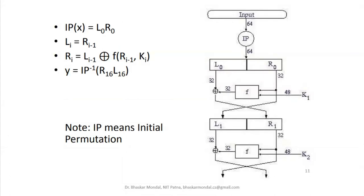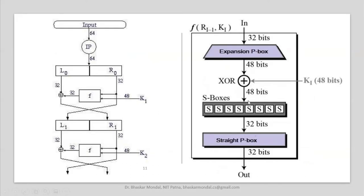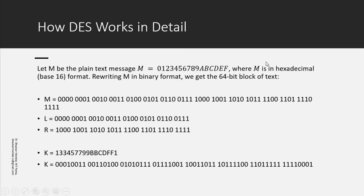Mathematically, the F function looks like this: it has the four steps I discussed — expansion permutation box, XOR, then the S-boxes (there are eight S-boxes), then straight permutation — and you get the output. This is the complete F function.